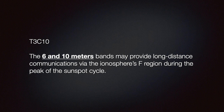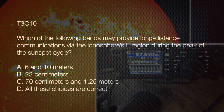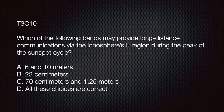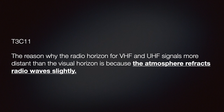The 6 and 10 meter bands may provide long-distance communications via the ionosphere's F2 region during the peak of the sunspot cycle. F2 skip affects not only the upper ends of the HF spectrum such as 10 meters, but it also affects the low end of the VHF spectrum — 6 meters — and propagation for that range is best during the peak of the sunspot cycle. The exam question: which bands may provide long-distance communications via the ionosphere's F2 region during the peak of the sunspot cycle? The correct answer is A — 6 and 10 meters.